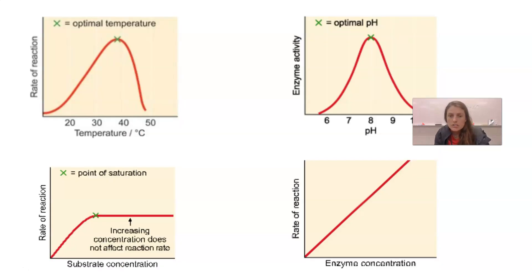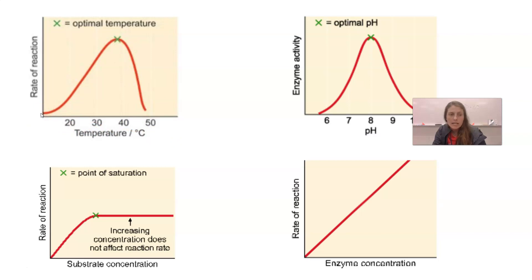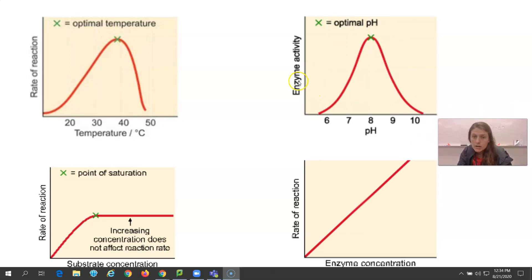An enzyme found helping break down food in our stomach operates in a much more acidic environment than one found in our intestines where we're absorbing nutrients. Every enzyme is unique with different substrates, different optimal temperatures, and different optimal pH values. Looking at a rate-of-reaction vs. temperature graph: we're low, we're low, we're low — if we're not in the optimal range, we drop off. For pH, we also get a bell curve — not operating at all at extremes, but at the optimal pH, the enzyme is good to go.